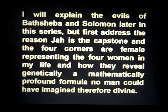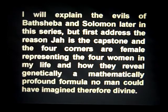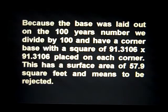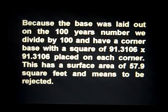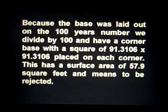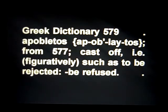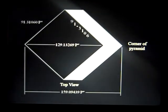We'll explain the evils of Bathsheba and Solomon later in this series, but first address the reason Yah is the capstone and the four corners are female, representing the four women in Yahweh's life, and how they reveal a mathematically profound formula that no man could have imagined — therefore it must be divine. Because the base was laid out on the 100-year number, when we divide it by 100 we have a cornerstone base with a square of 91.3106 pyramid inches, so that squared gives a surface area of 57.9 square feet, which in Greek means 'to be rejected' or 'to be refused.'